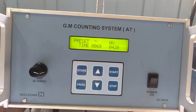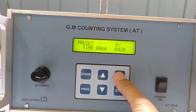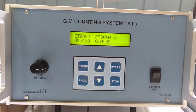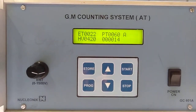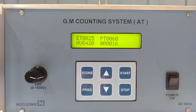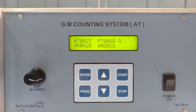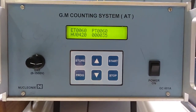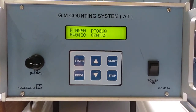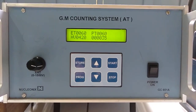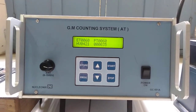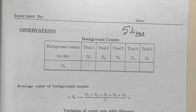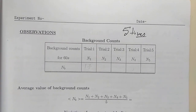Record the counts by pressing the start button. It starts counting. Without the source, take about 5 background counts for a preset time of 60 seconds. For an elapsed time of 60 seconds, the count is noted. Now compute the average background count. The average value of background can be calculated using the relation shown.